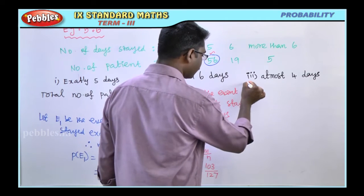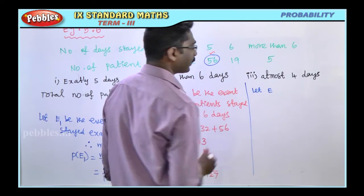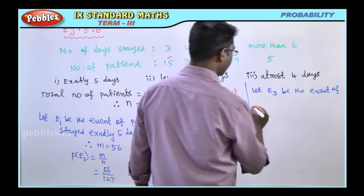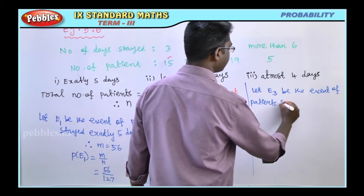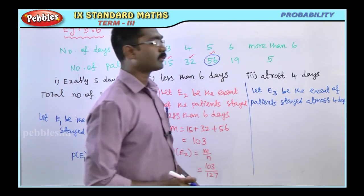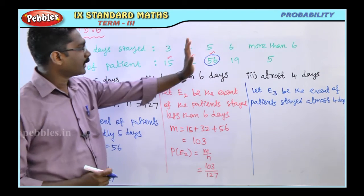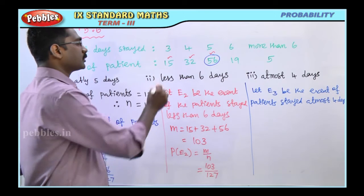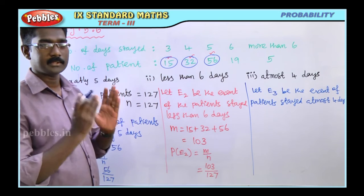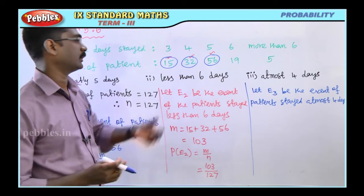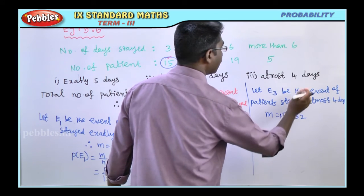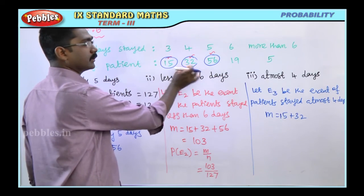For the third problem, at most 4 days: let E3 be the event that a patient stayed at most 4 days. At most 4 days includes 3 days (15 patients) and 4 days (32 patients). So m equals 15 plus 32, giving the number of favorable outcomes for at most 4 days.